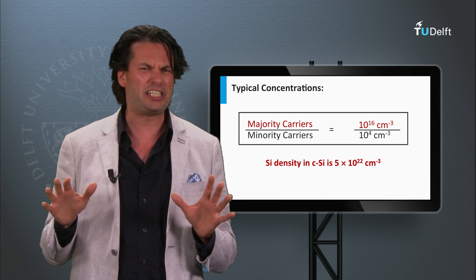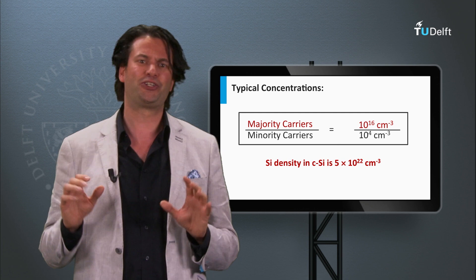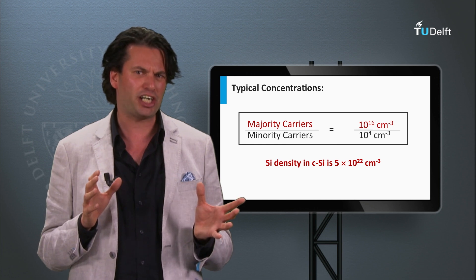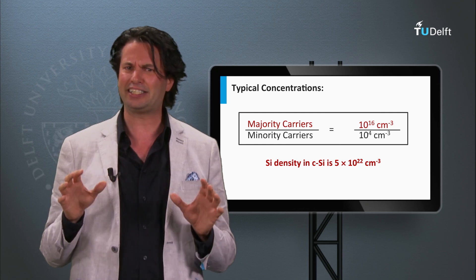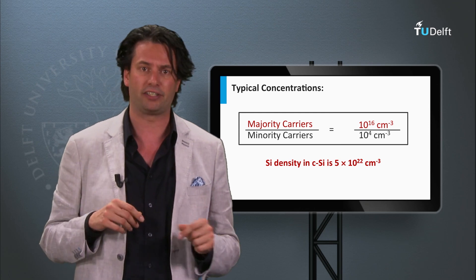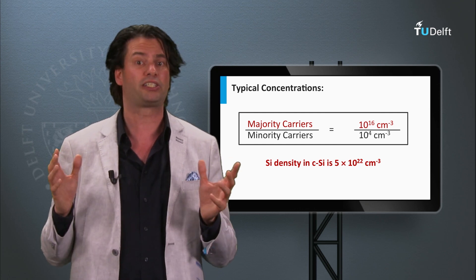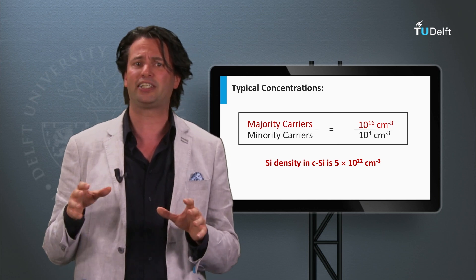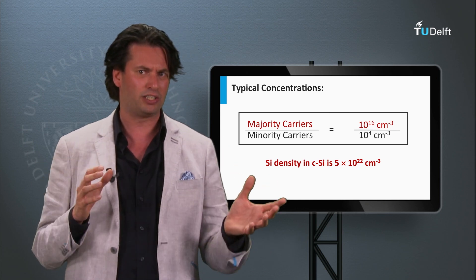Let's get a feeling for the typical concentrations for majority and minority charge carriers in doped silicon networks in the dark. Typical densities for majority charge carriers in silicon are 10 to the 16th per cubic centimeter, whereas the density of minority charge carriers in that case would be 10 to the 4th per cubic centimeter. This shows that the density of majority charge carriers can be many orders of magnitude higher than that of the minority charge carriers. Note that the silicon density in crystalline silicon is 5 times 10 to the power 22 per cubic centimeter, meaning the ratio of majority charge carriers to silicon atoms in this example is 1 to 5 million.